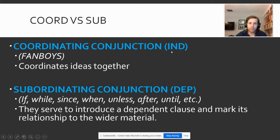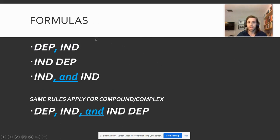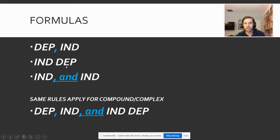So just as a quick review: coordinating conjunctions — those FANBOYS: 'for,' 'and,' 'nor,' 'but,' 'or,' 'yet,' 'so' — bring ideas together. And then subordinating conjunctions — here are a few examples: 'if,' 'while,' 'since,' 'when,' 'unless,' 'after,' 'until,' 'because' — anything that makes something dependent on something else. They serve to introduce a dependent clause, and those are our signal markers for dependent clauses. Here are some formulas to help you — I'd write these down. When a dependent clause comes before an independent clause, we need a comma separating the two, because the dependent clause is acting as an introduction. If it's an independent clause followed by a dependent clause, no comma — just keep on writing, because you've already given the reader the main part of your sentence and then the auxiliary information.